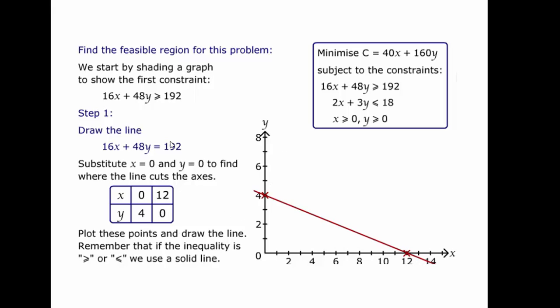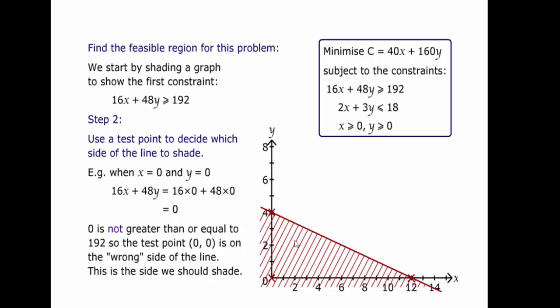The inequality we want is greater than or equal to 192. Well, if the line doesn't go through the origin, the origin is the easiest point to check that. If we make x zero and y zero, you can see that 0 clearly isn't greater than or equal to 192. So the origin is in the region we don't want. So the region below the line where the origin lies must be the bit we don't want. So we shade that out like so.